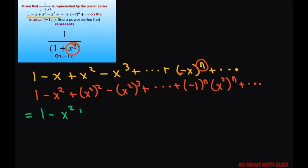Alright. Plus x to the 4th minus x to the 6th plus dot dot dot plus negative 1 to the nth power times x using your power property of exponents. That's 2n plus dot dot dot.